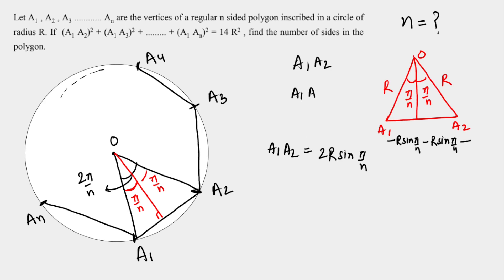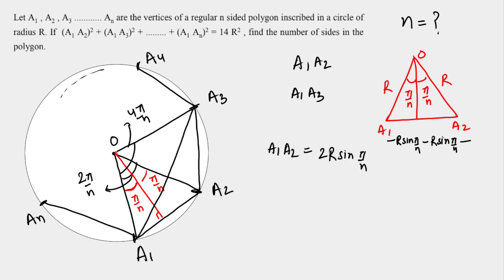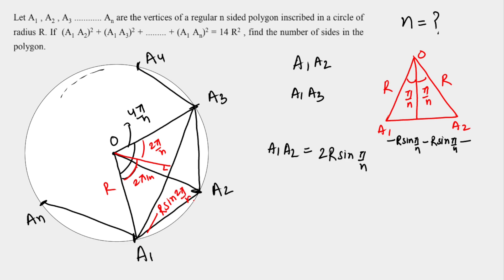Next, we calculate a1a3. Connecting the center with a3, the total angle is 2π/n + 2π/n = 4π/n. Dropping a perpendicular from the center, the two congruent triangles each have angle 2π/n. The vertical projection gives R sin(2π/n) on each side, so a1a3 = 2R sin(2π/n).